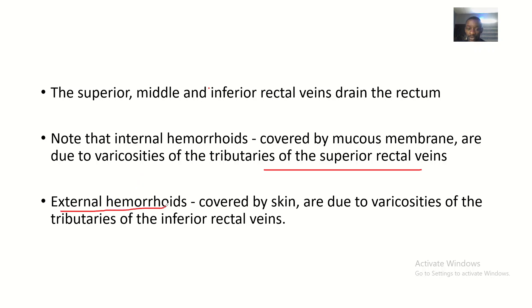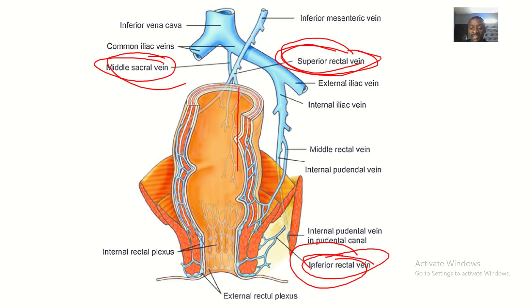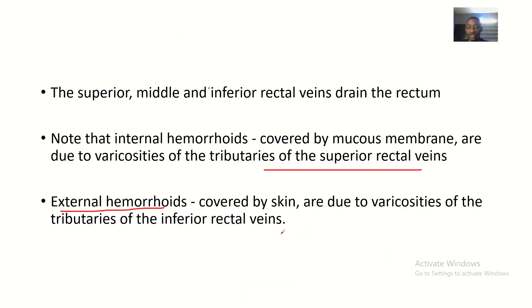External hemorrhoids are due to varicosities of the tributaries of the inferior rectal veins. The inferior rectal veins supply the rectum inferiorly and are closer to the surface — subcutaneous, closer to your skin. If there are varicosities of these veins it will show on your skin as dark lines. That is what we call external hemorrhoids.